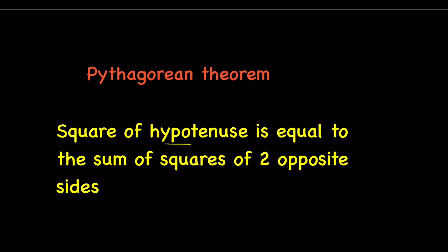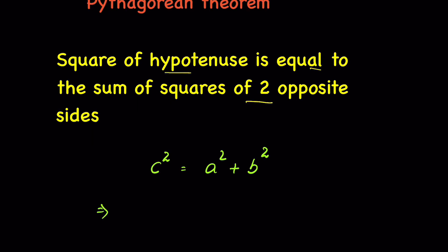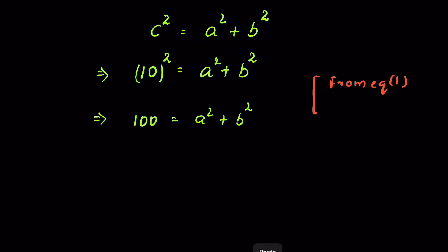The square of the hypotenuse is equal to the sum of squares of the two opposite sides. That means c² = a² + b². The hypotenuse given is 10 cm, so we write 10² = a² + b², or 100 = a² + b².